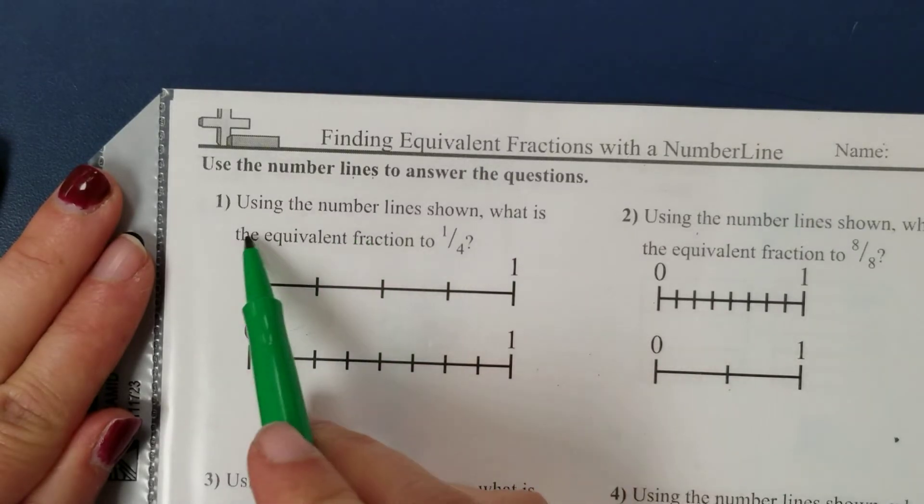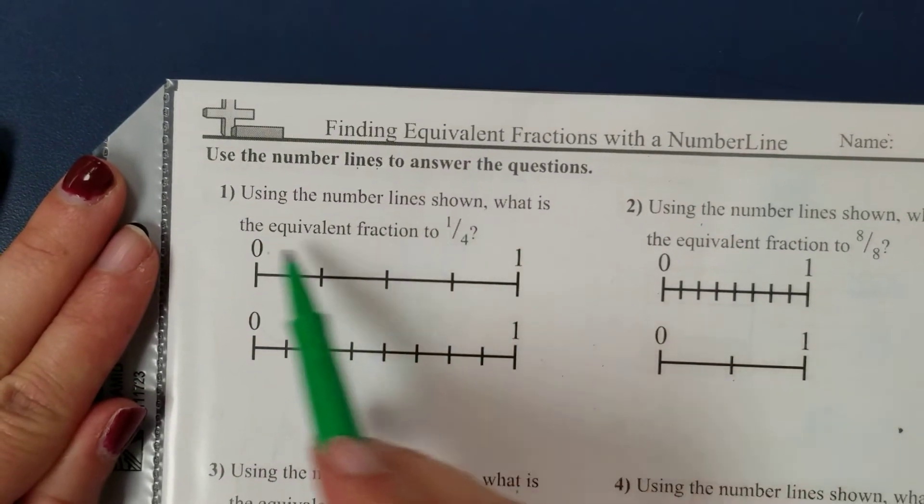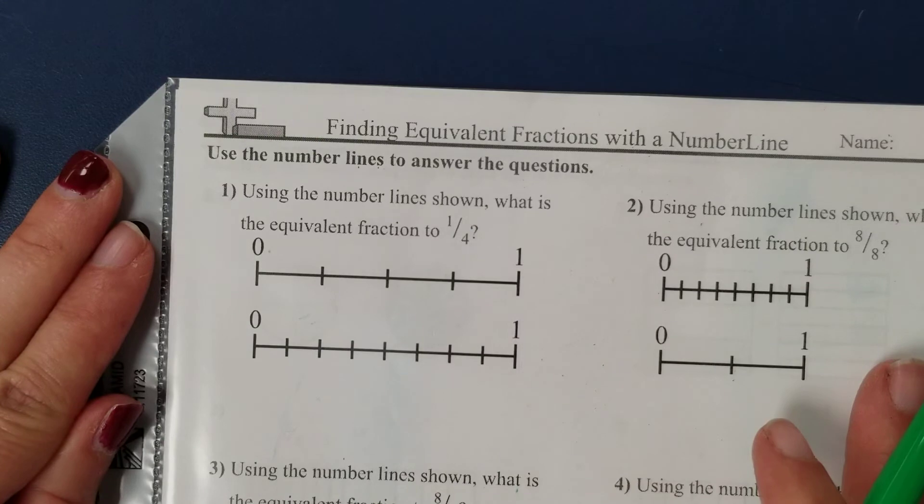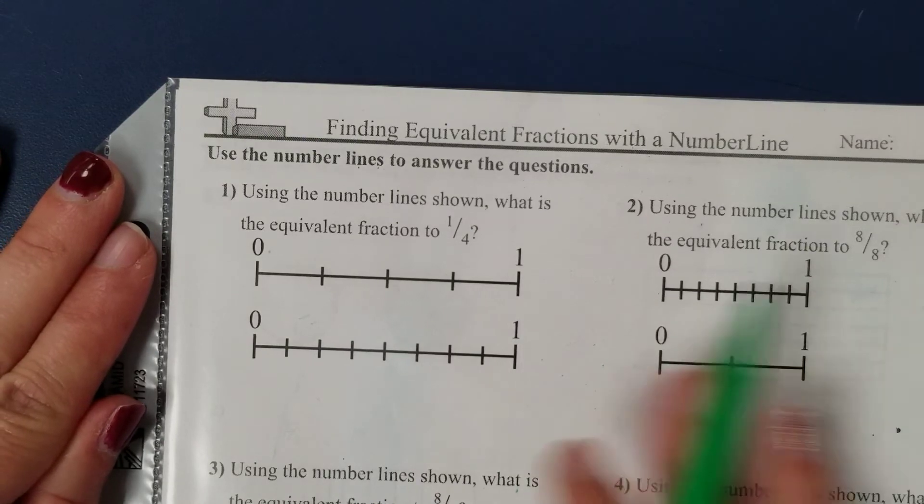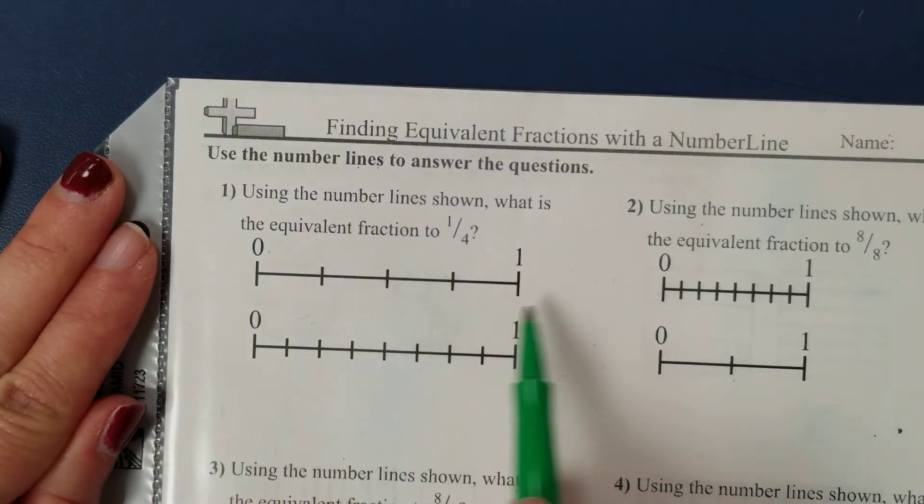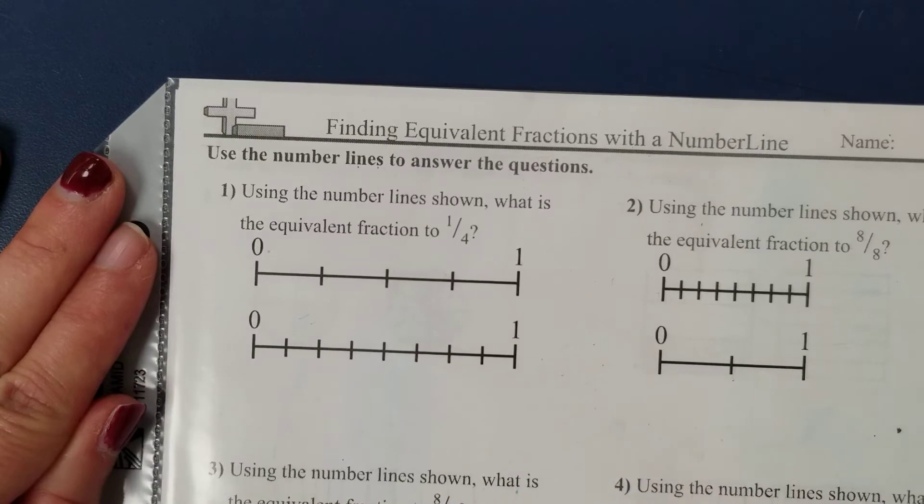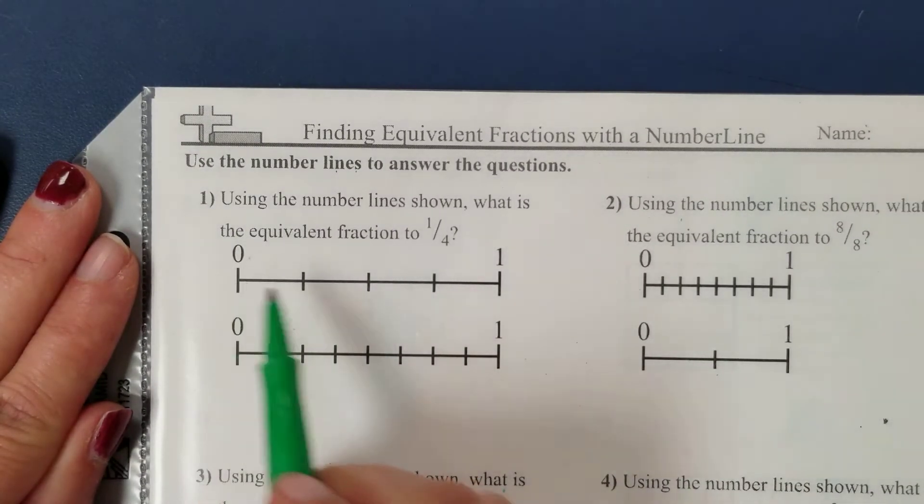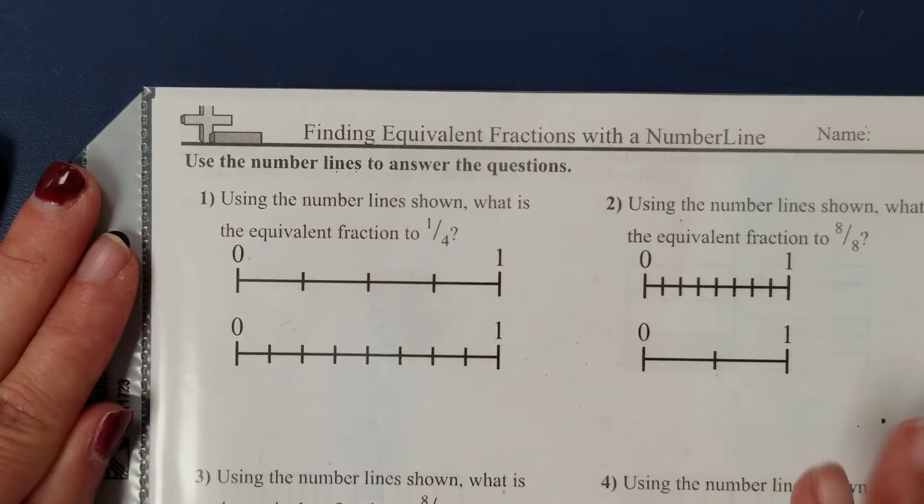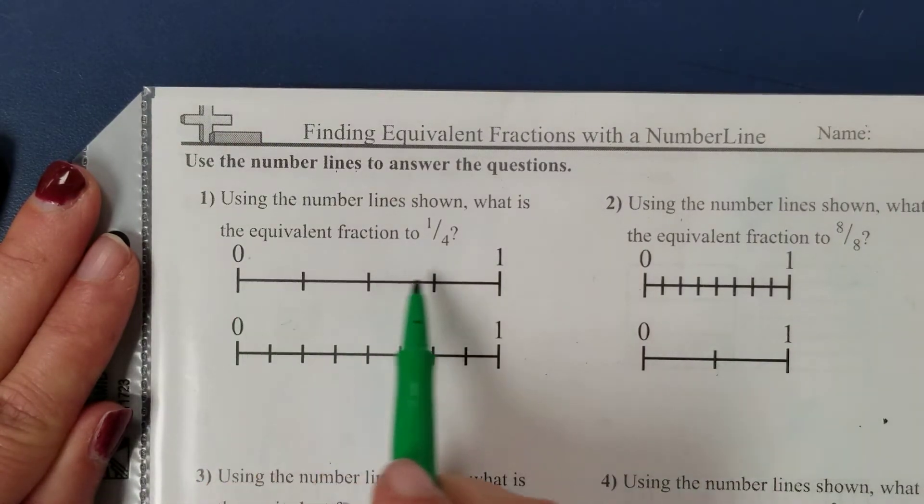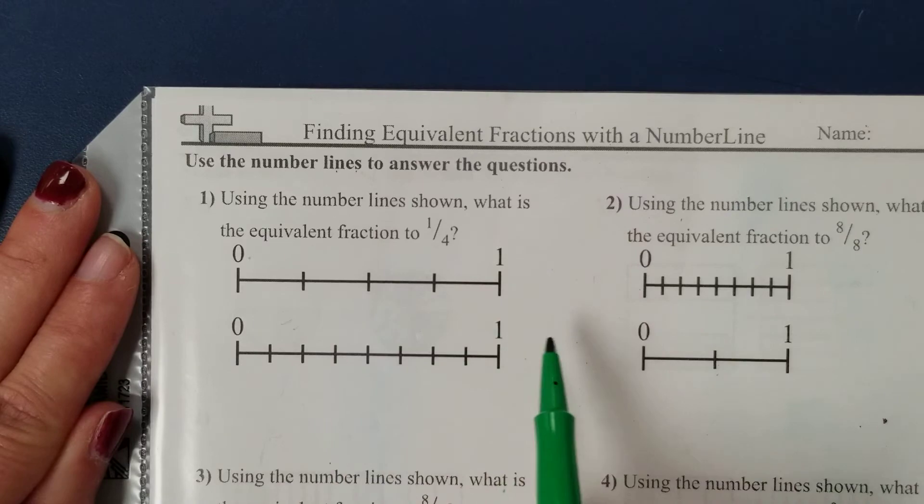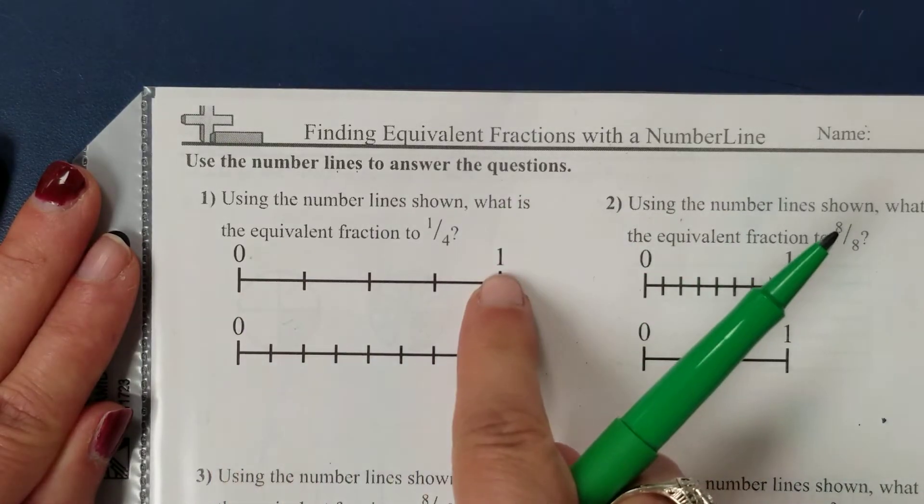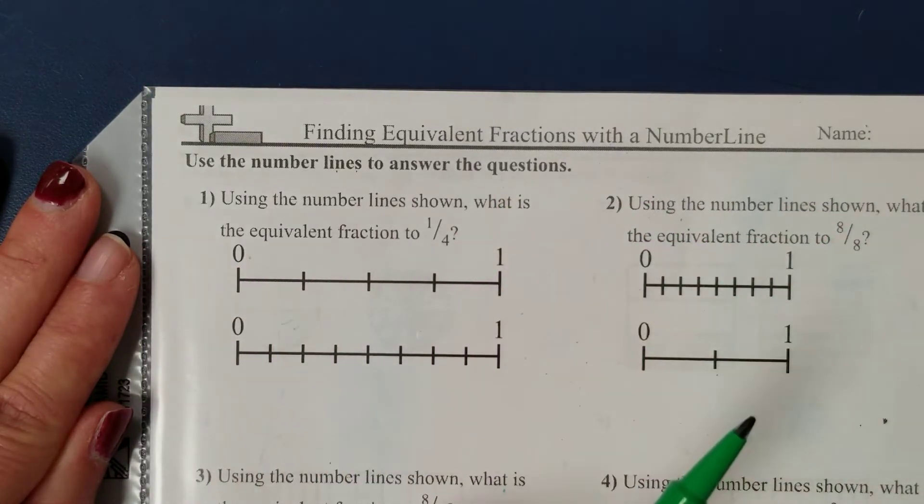So if we look at number one, it says using the number line shown, what is the equivalent fraction to one-fourth? Well first I have to figure out where is one-fourth on this number line. On this paper, every number line has a zero on the left and a one on the right. So we know we are going to be counting the equal number of spaces between zero and one. How is this number line equally divided into fractions?